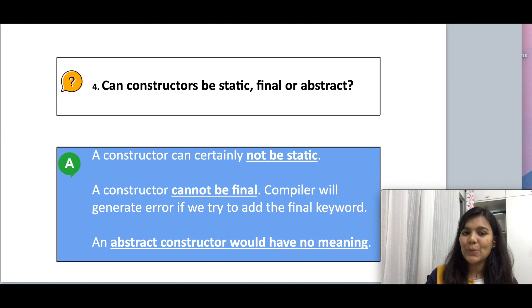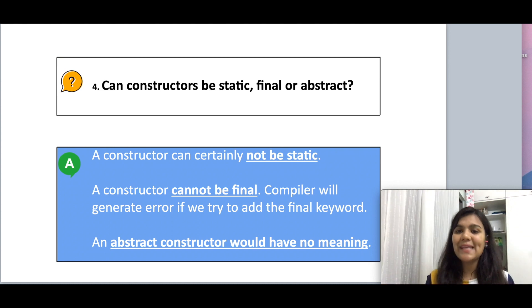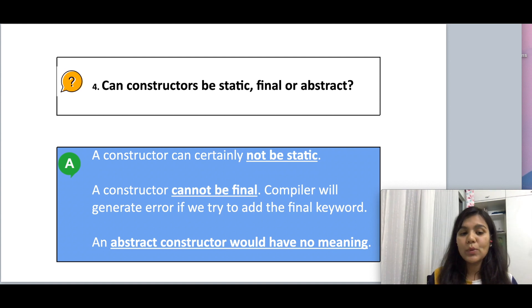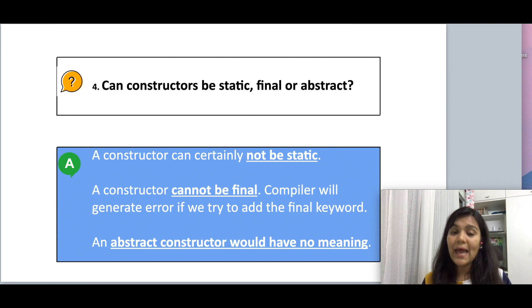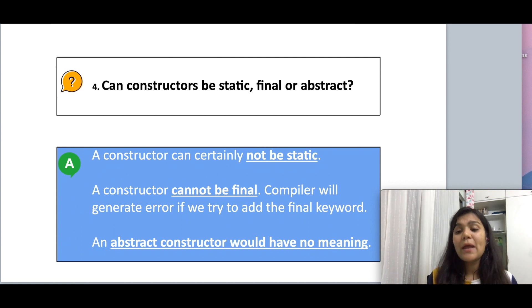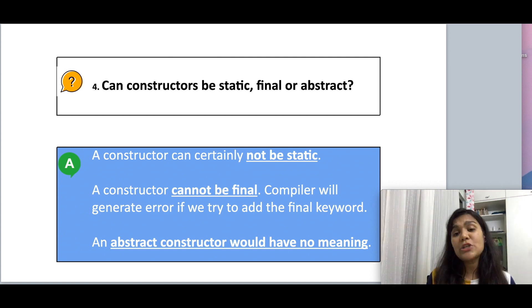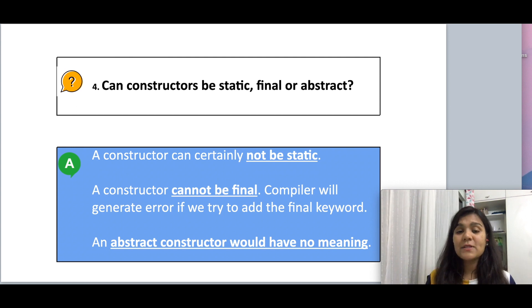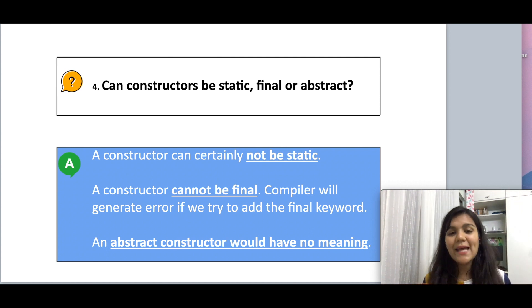Moving on to the next question: can constructors be static, final, or abstract? A constructor cannot be static. The static keyword when added to a variable or method makes it belong to the class and not to the instance. But constructors are used to initialize instance variables — every time an instance of a class is created, a constructor is called. So a constructor cannot be static.